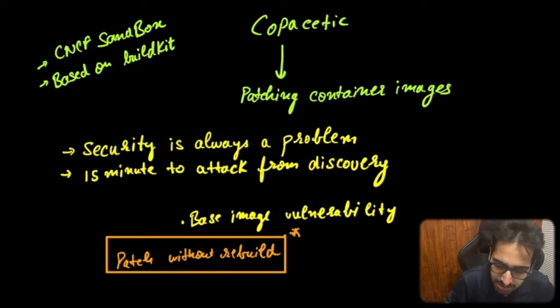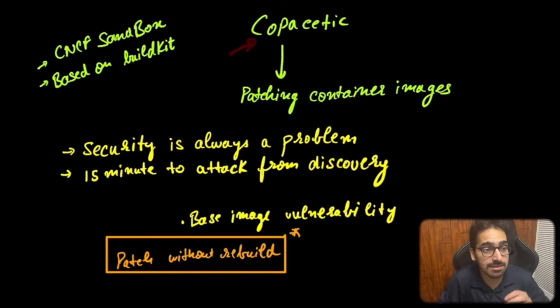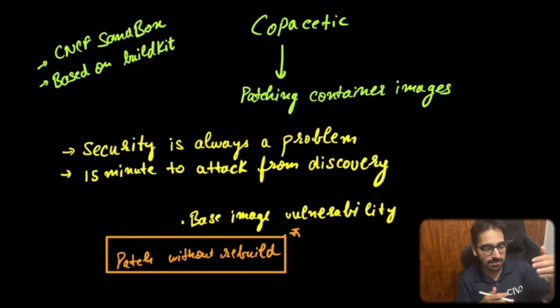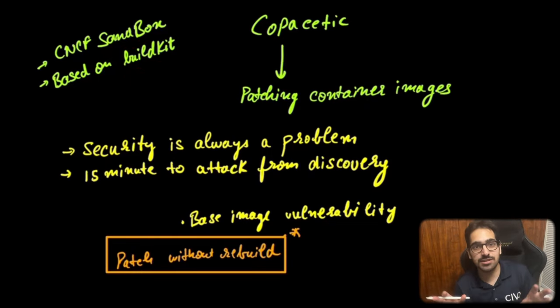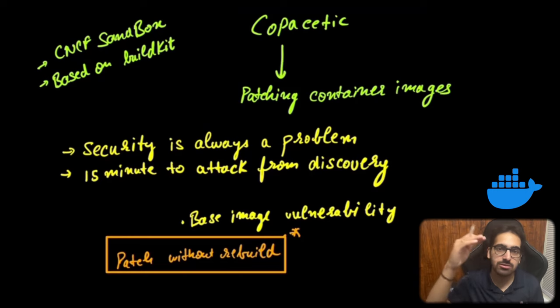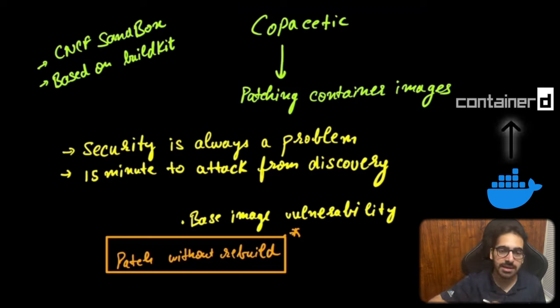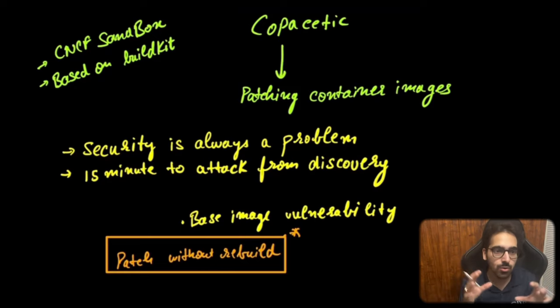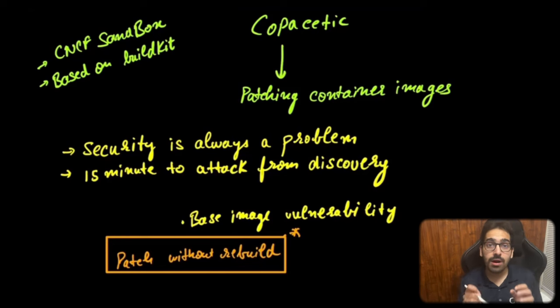Copa is a CNCF sandbox project based on BuildKit. If you don't know about BuildKit — you're actually using it everywhere. Docker, behind the scenes, uses containerd, which behind the scenes uses BuildKit. BuildKit is a tool that can convert your whole codebase into an artifact which is efficient, expressive, and repeatable. Copa is a CLI tool that can directly patch container images by adding a layer on top of them.